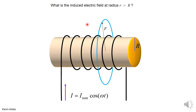We're asking the question: what's the electric field that's induced at this radius r? In this case, small r is bigger than big R, which is the radius of the cylinder. Later on, we're going to take the case where small r is less than big R, and we'll do this separately.